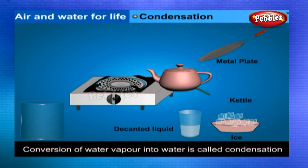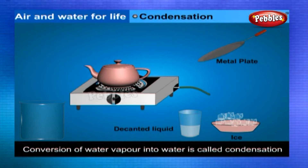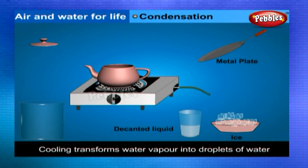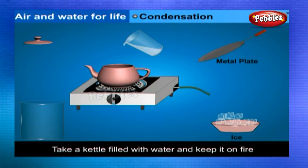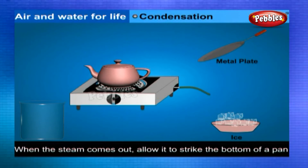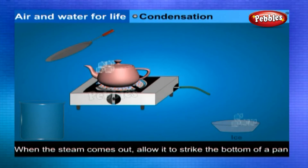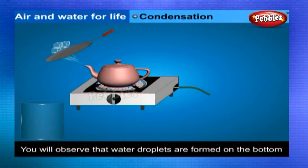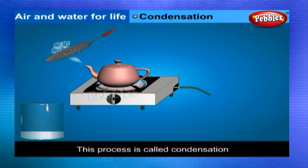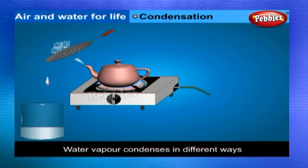Condensation: Conversion of water vapor into water is called condensation. Cooling transforms water vapor into droplets of water. Take a kettle filled with water and keep it on fire. Let the water boil; when steam comes out, allow it to strike the bottom of a pan filled with ice-cold water. You will observe that water droplets are formed on the bottom of the pan — this is condensation.